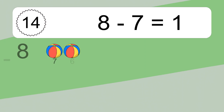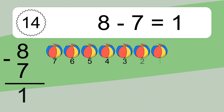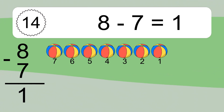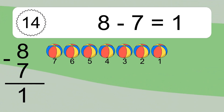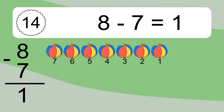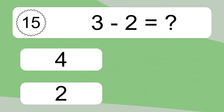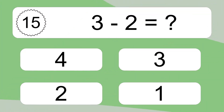8 minus 7 equals what? 8 minus 7 equals 1. Let's count it: 7, 6, 5, 4, 3, 2, 1.